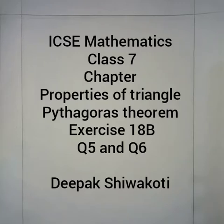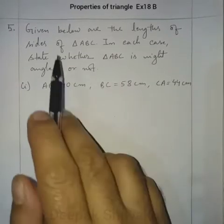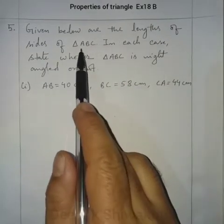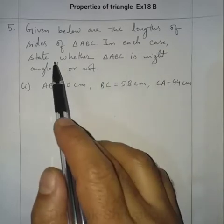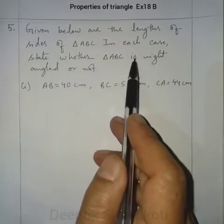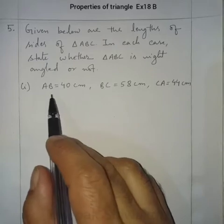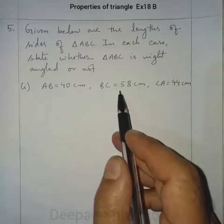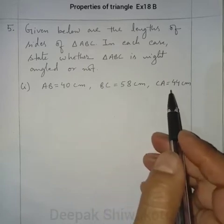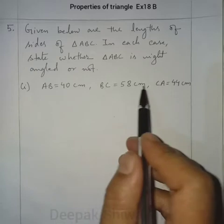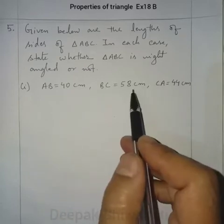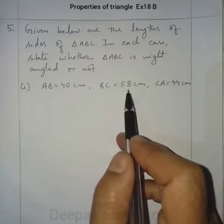Welcome to Class 7 Mathematics, properties of triangle, Exercise 18B, Question 5. The lengths of sides of triangle ABC are given; we need to state whether triangle ABC is right-angled or not. Here three sides are given: AB = 40 cm, BC = 58 cm, CA = 44 cm. Among these three lengths, we have to select the longest one, which is 58 cm.